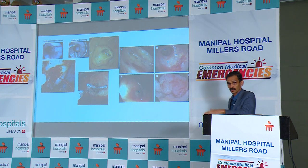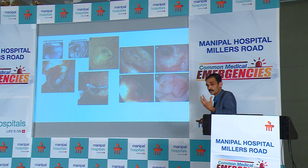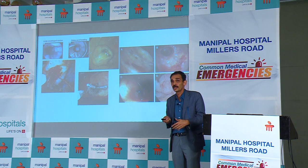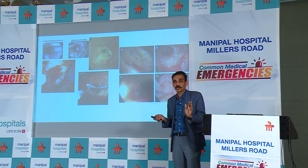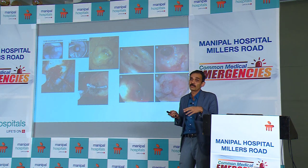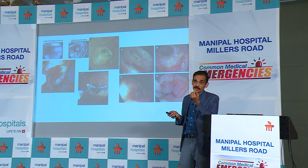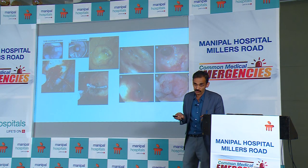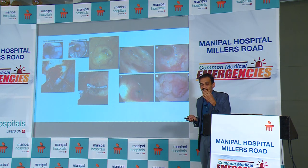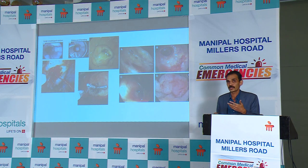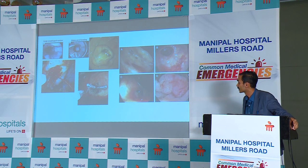The other massive bleeds we see are polypectomy bleeds. We do a polypectomy, send the patient home after 24 hours, and they come back with a massive bleed because the artery at the base of the polyp has given way. At least in those situations we know where the bleed is, making it easy to identify and clip.